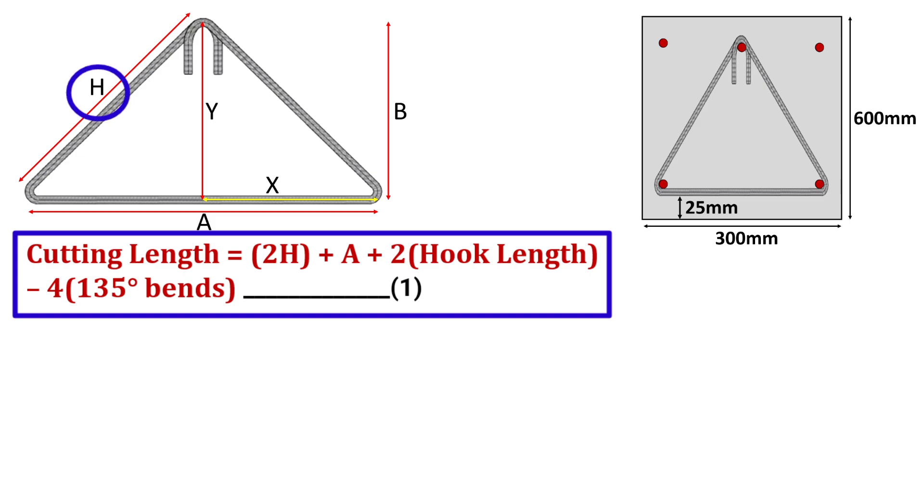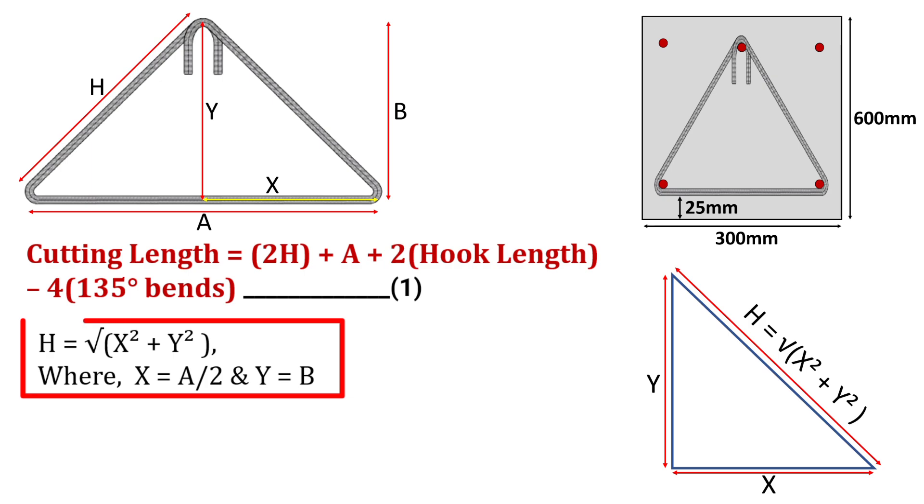H is the adjacent side of this triangle which is calculated by considering this right angular triangle in which H will be equal to under root X squared plus Y squared, where X is equal to half of this base A which will be A by 2, and Y is equal to B.